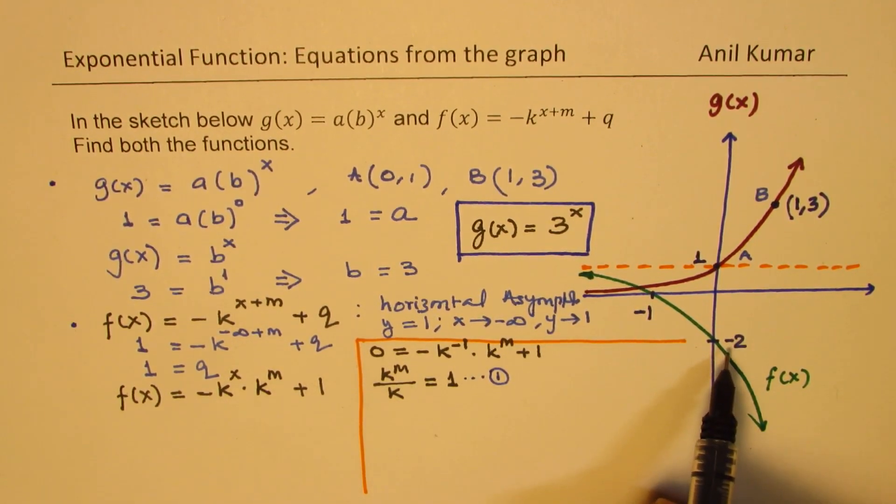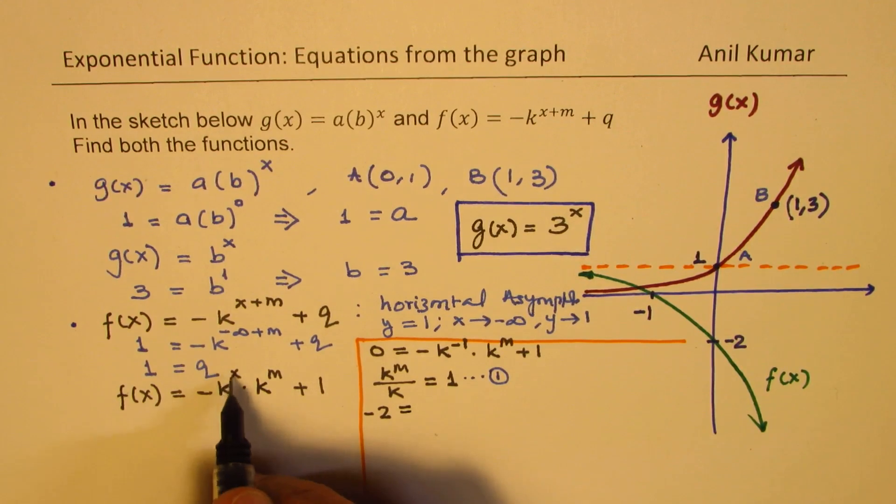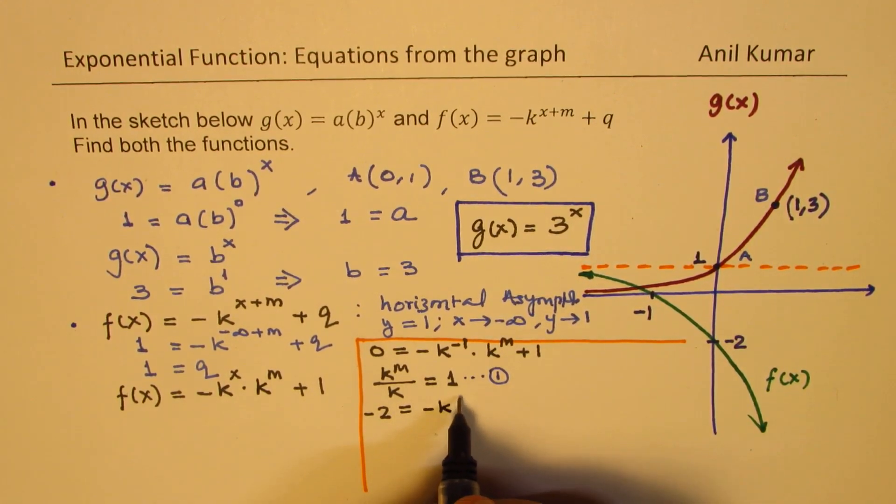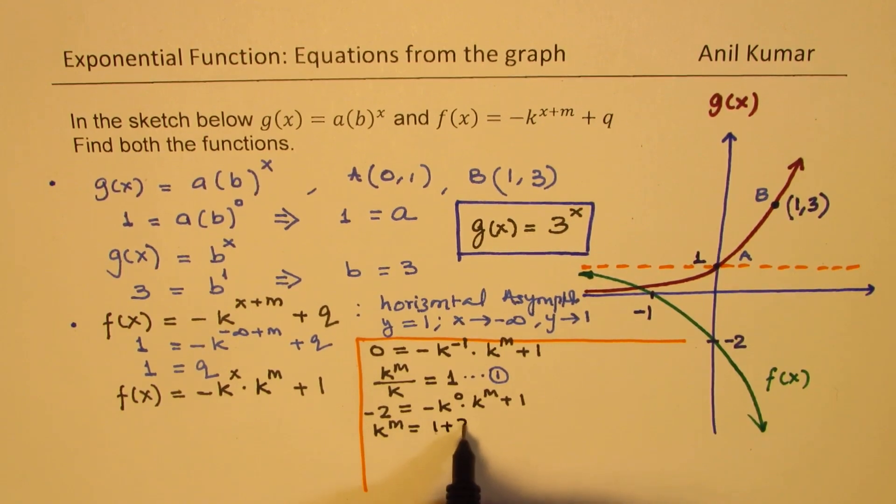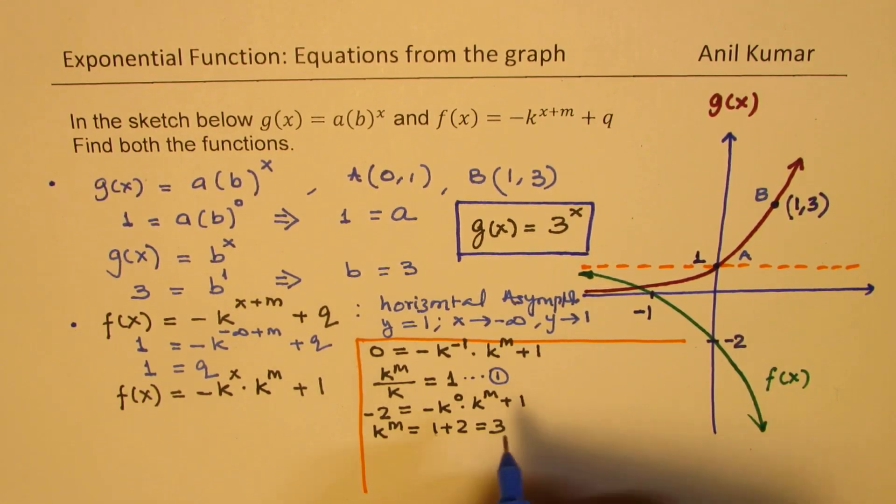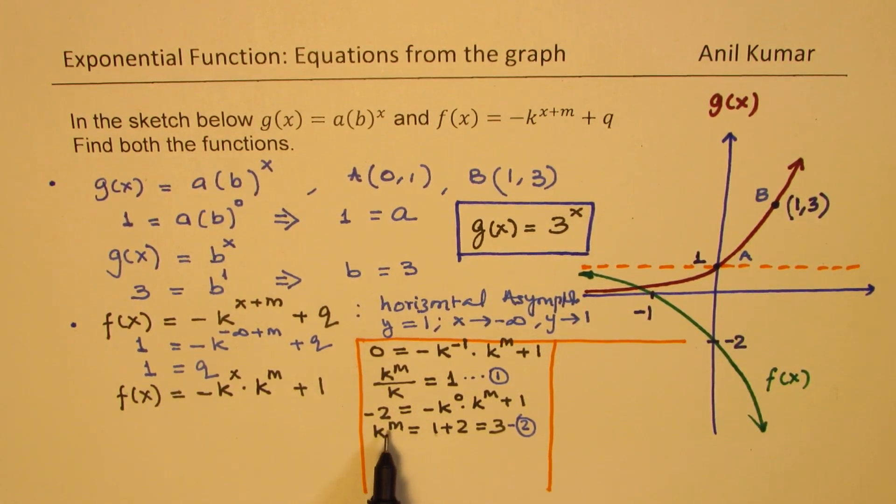Now, we'll substitute the other point, which is x = 0, y = -2. So we have -2 here, x is 0. So that means -k^0 times k^m + 1. Now, if this first term, anything to the power of 0 is 1, so bringing it to the left side, we get k^m = 1 + 2, which is equal to 3. We'll call this as our equation number 2 for part b.